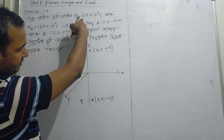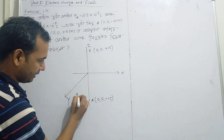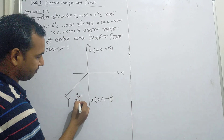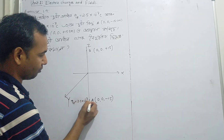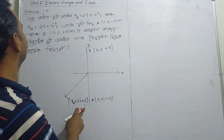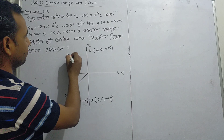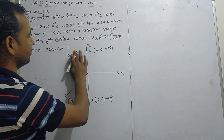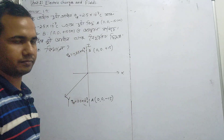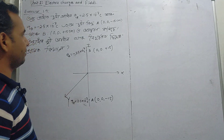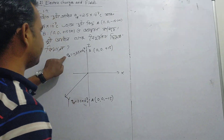The point charge at A is QA, equal to 2.5 into 10 to the power minus 7 Coulomb. Similarly, QB is also equal to 2.5 into 10 to the power minus 7 Coulomb.